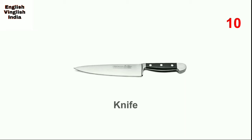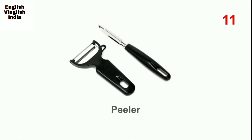Next, knife. A knife is a tool with a blade attached to a handle, and we use it for chopping, cooking, or cutting vegetables or fruits.